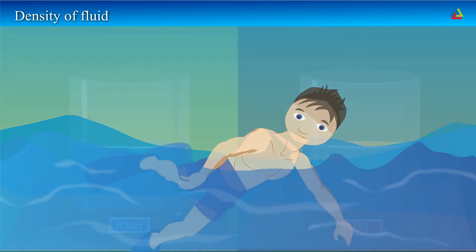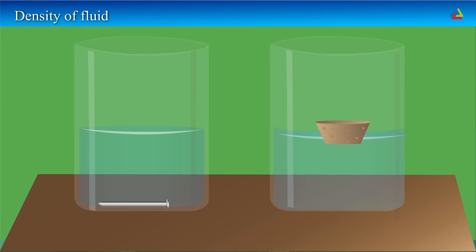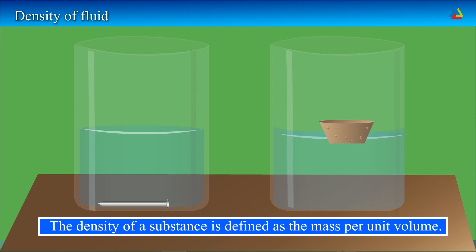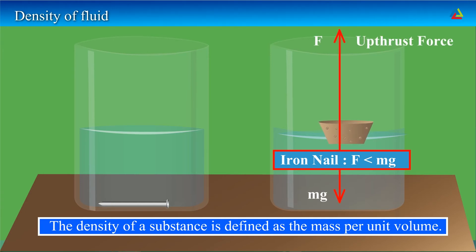I observed that an object like a nail sinks in water, while a piece of cork of equal mass does not sink. Yes, this happens because of the difference in their densities. The density of a substance is defined as the mass per unit volume. The density of cork is less than the density of water. This means that the upthrust of water on the cork is greater than the weight of the cork, so it floats.